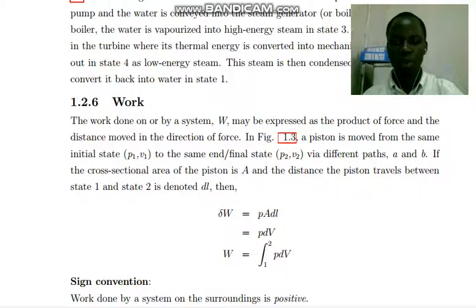If we take an example of a piston which is moved from the same initial state under pressure 1 and volume 1 to the same end or final state under pressure 2 and volume 2 via different paths, let's say A and B, if the cross-sectional area of the piston is A and the distance the piston travels between state 1 to state 2 is denoted by delta L, then delta W which is work is equal to pressure times area times small change in length which can be simplified as pressure times small change in volume. When we integrate, we get from state 1 to state 2 the integral of pressure and volume.